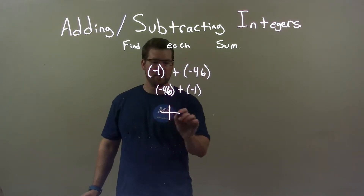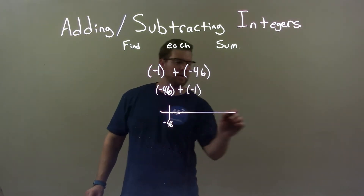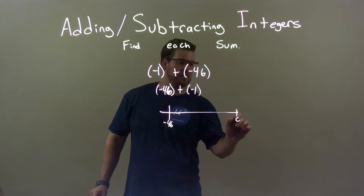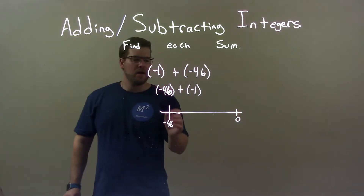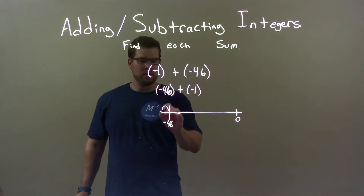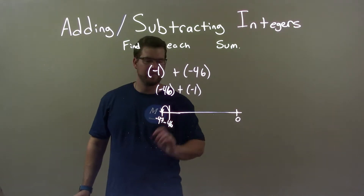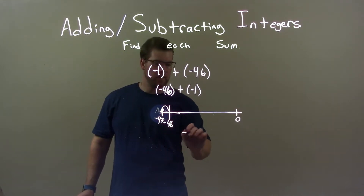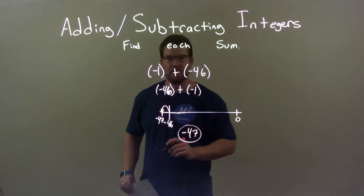If we think about negative 46 on the number line, and over here is 0, as we go to the left one unit, 1 to the left is just negative 47. So our final answer here is just negative 47.